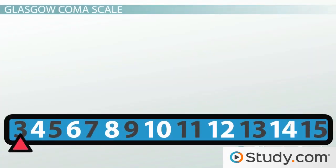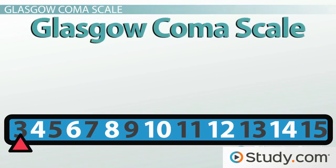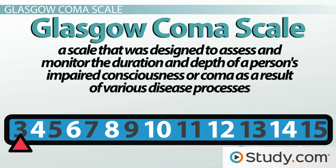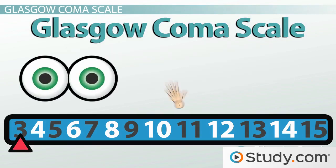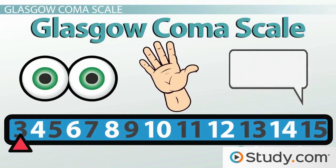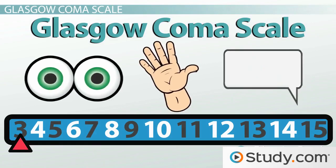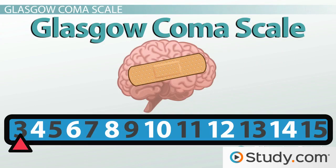As a case in point, there's something known as the Glasgow Coma Scale, which is a scale that was designed to assess and monitor the duration and depth of a person's impaired consciousness or coma as a result of various disease processes. This scale tests a person's eye, motor, and verbal response to a variety of stimuli. The grades for each portion of the tests are added up to classify the extent of brain injury, with cumulative scores ranging from a minimum of 3 to a maximum of 15.